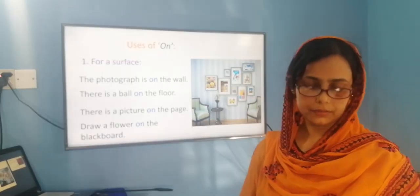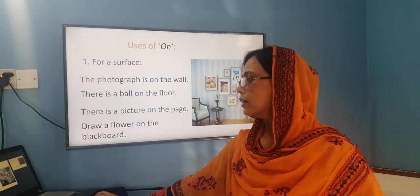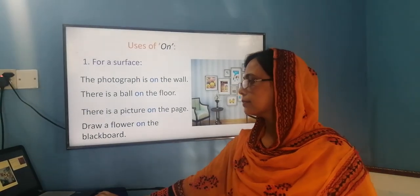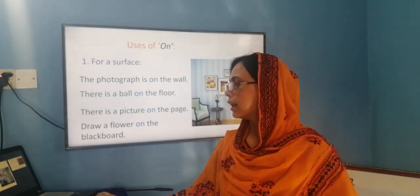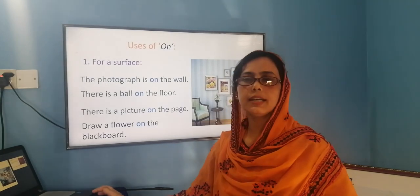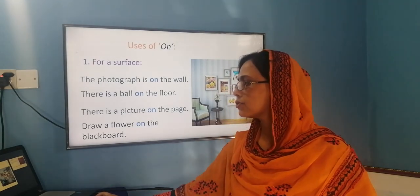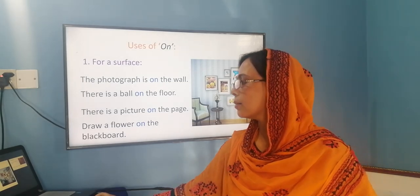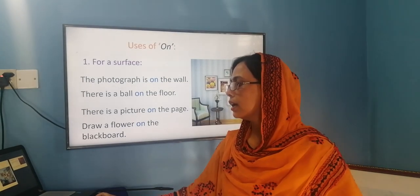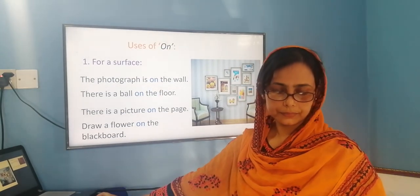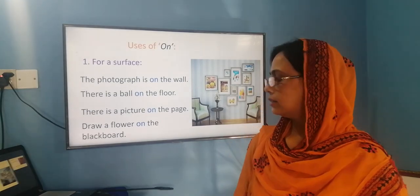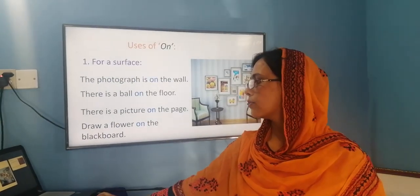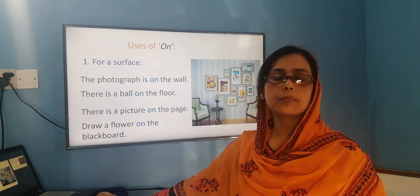Now let's look at the uses of 'on.' The main use of 'on' is when something is on a surface. For example, 'the photograph is on the wall.' Similarly, 'there is a ball on the floor,' 'there is a picture on the page,' 'draw a flower on the blackboard.' All of these — wall, floor, page, blackboard — are surfaces, either horizontal or vertical.